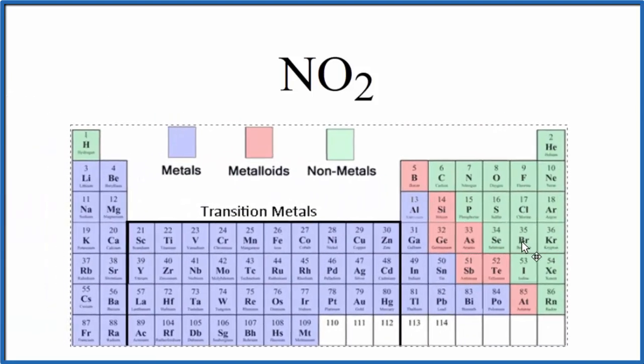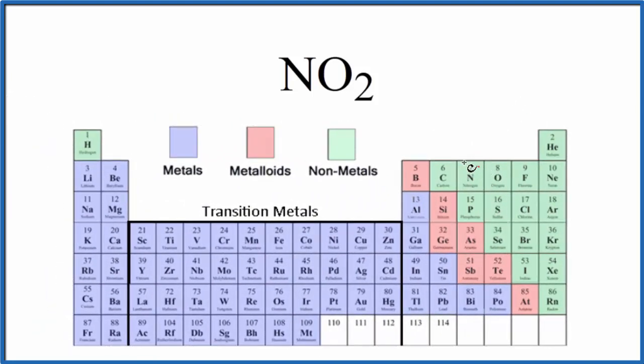So if we look at the periodic table here and we find nitrogen, that's right here, and then oxygen, they're both nonmetals.